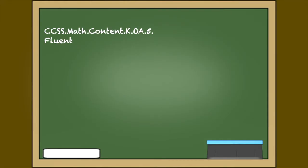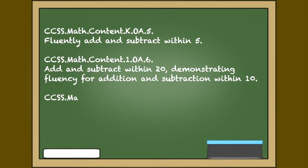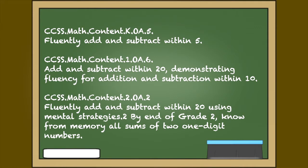This activity will address the Common Core Standards: Kindergarten Operations and Algebraic Thinking 5, Fluently Add and Subtract Within 5. First Grade Operations and Algebraic Thinking 6, Add and Subtract Within 20 Demonstrating Fluency for Addition and Subtraction Within 10. Second Grade Operations and Algebraic Thinking 2, Fluently Add and Subtract Within 20 Using Mental Strategies.